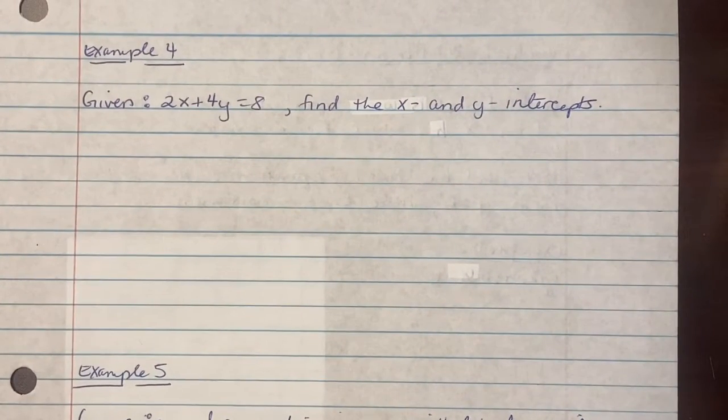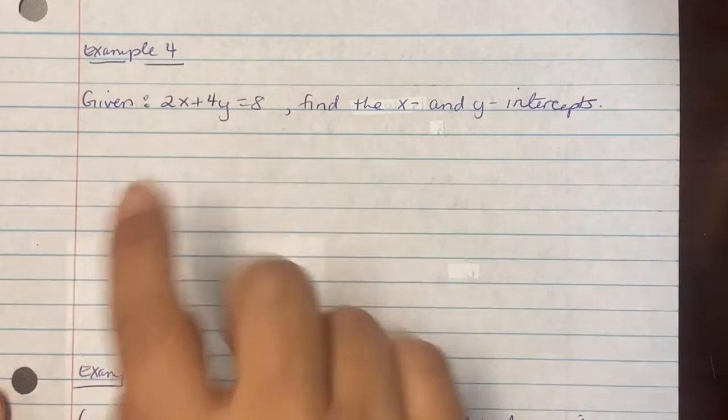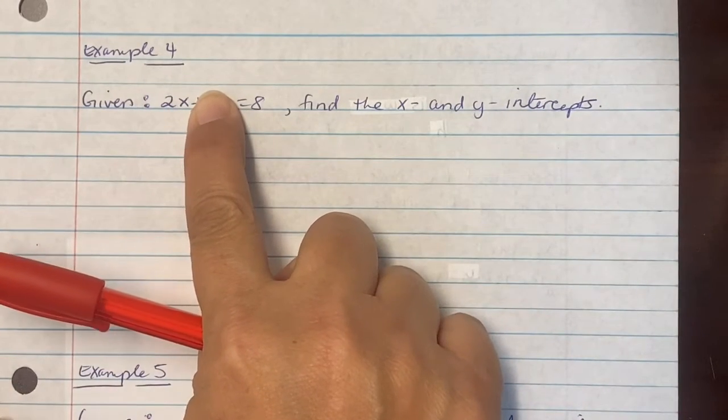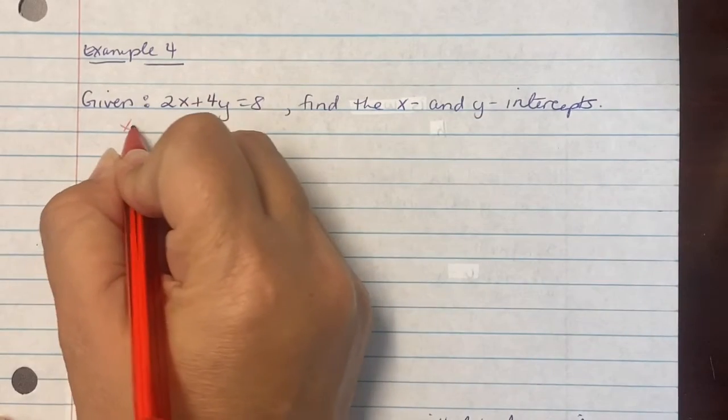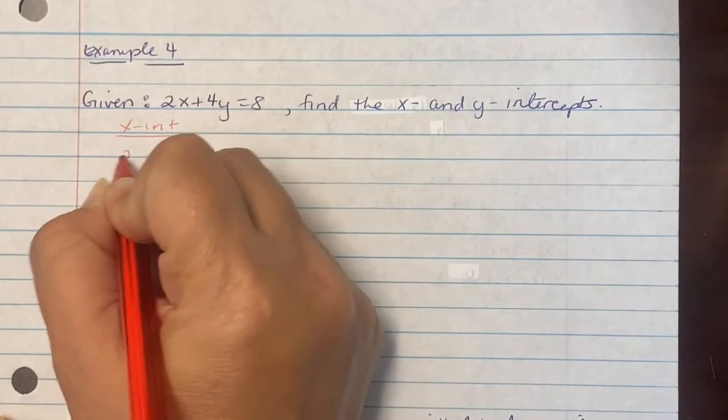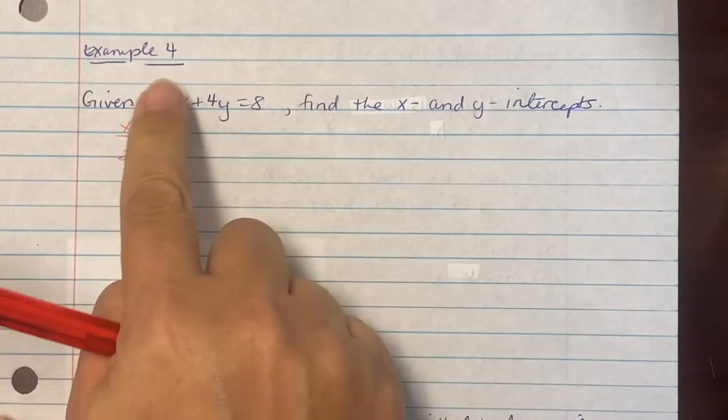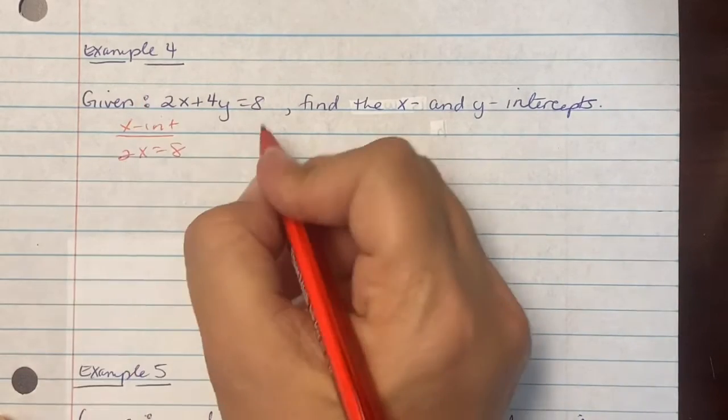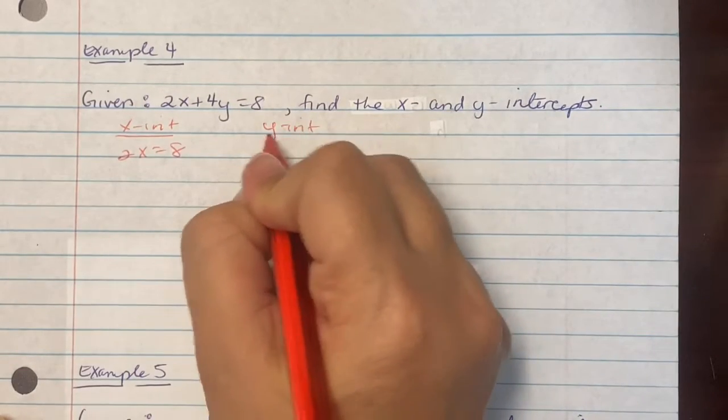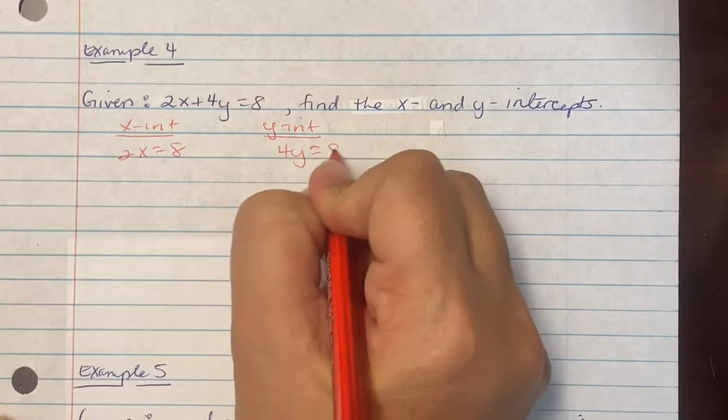Example 4 says you're given 2x + 4y = 8. It says find the x and y intercept. So same concept. Cover your y value. And you have your first equation for your x intercept. So we have 2x = 8. Cover the x. You have your y intercept equation. Which is 4y equaling 8.